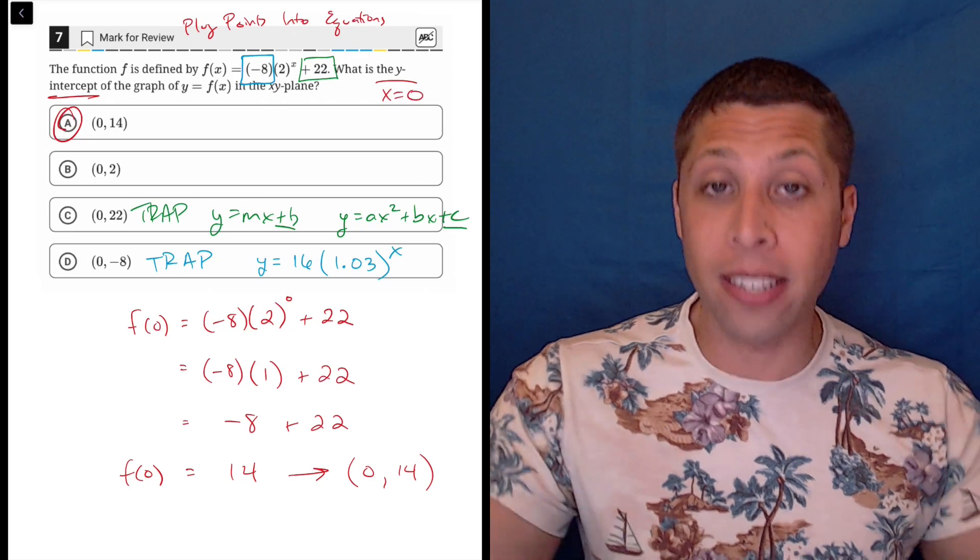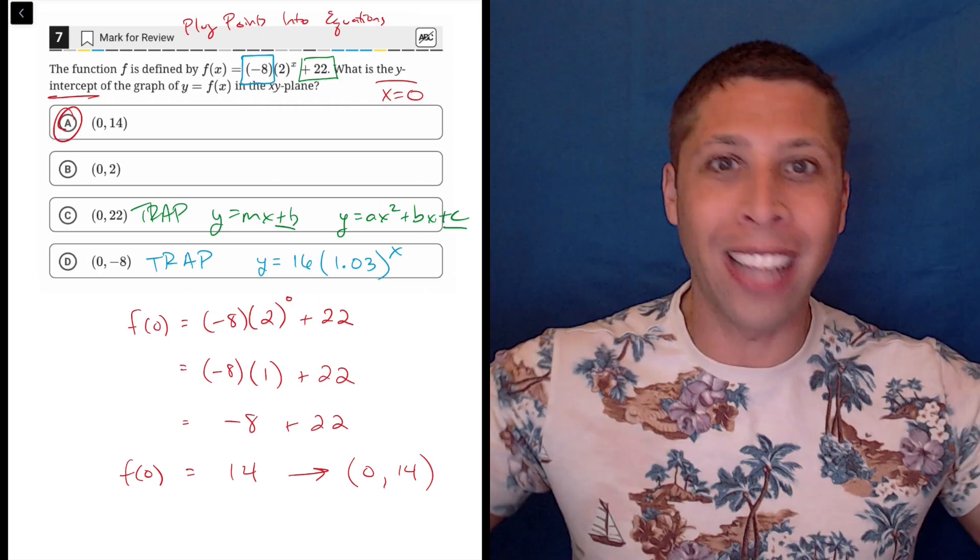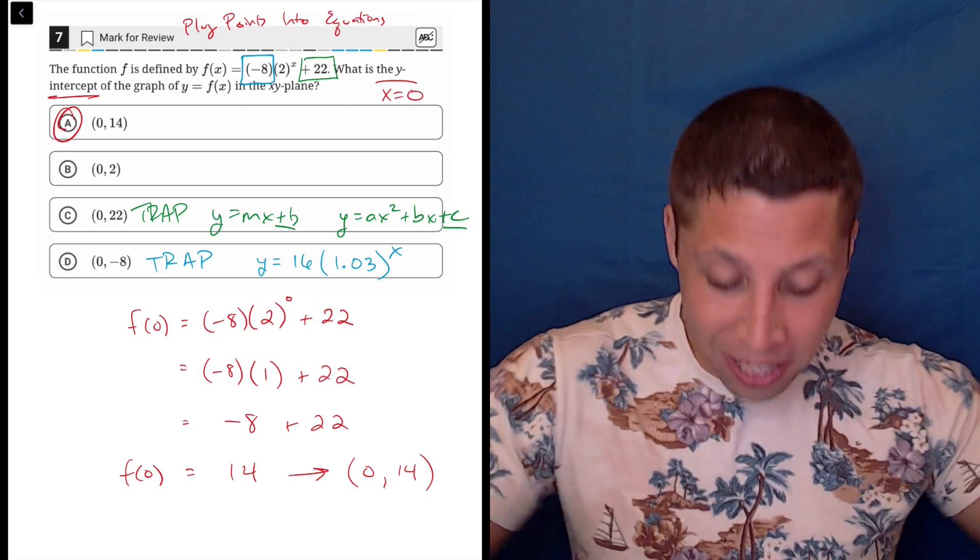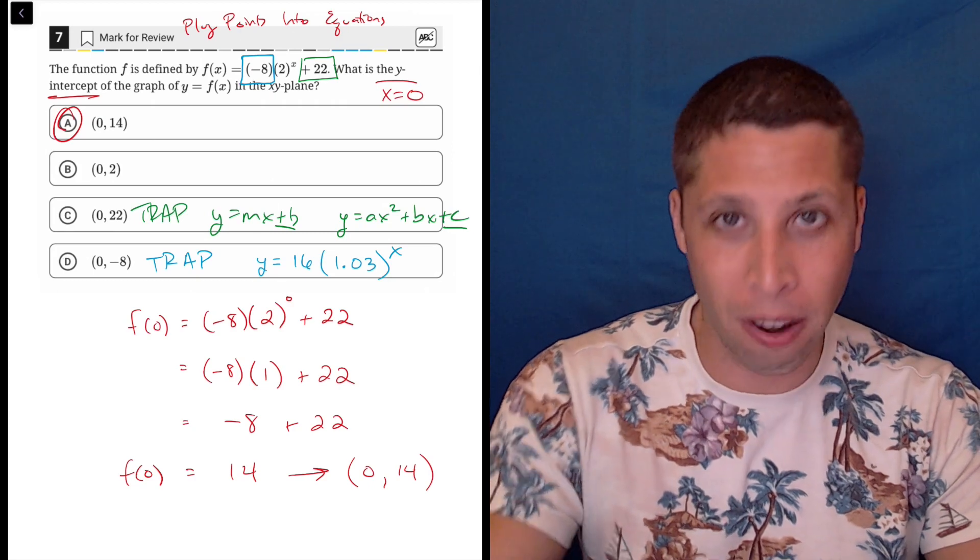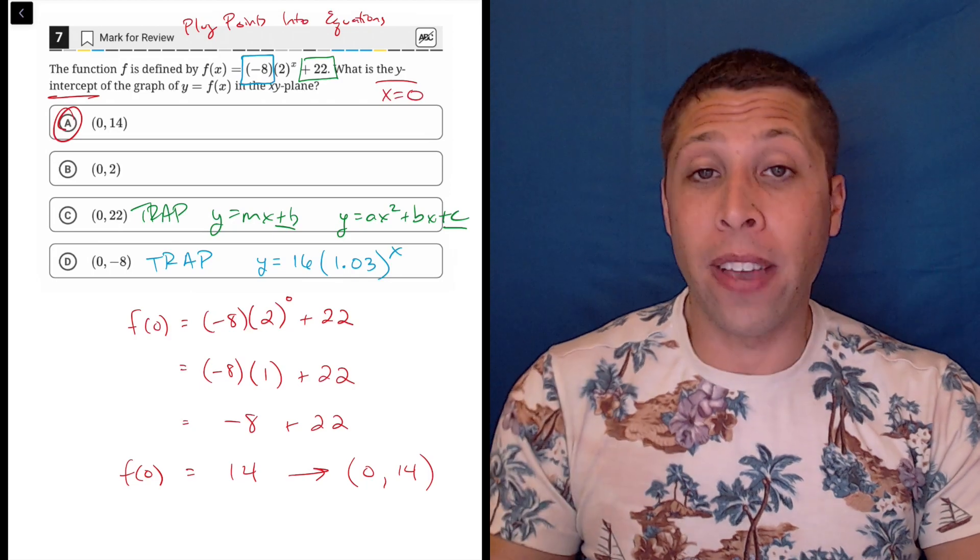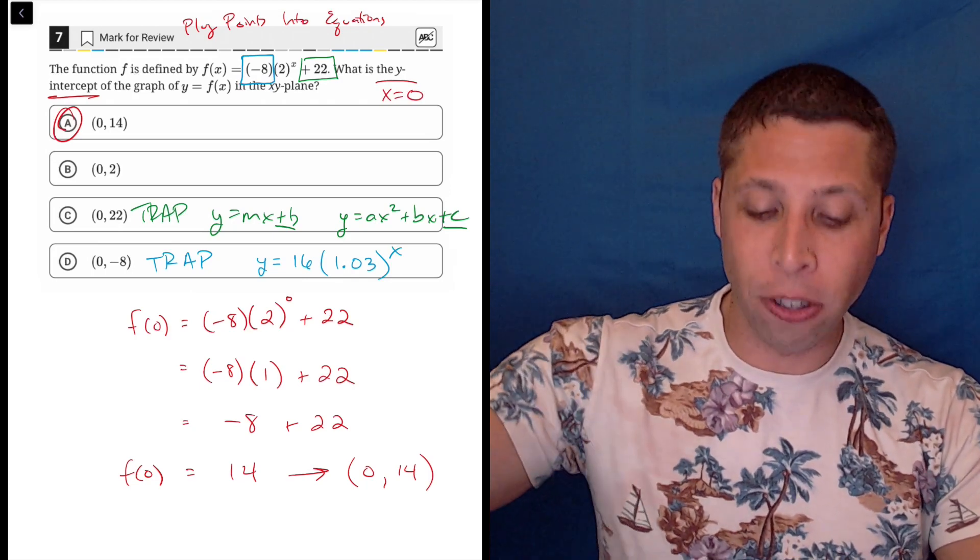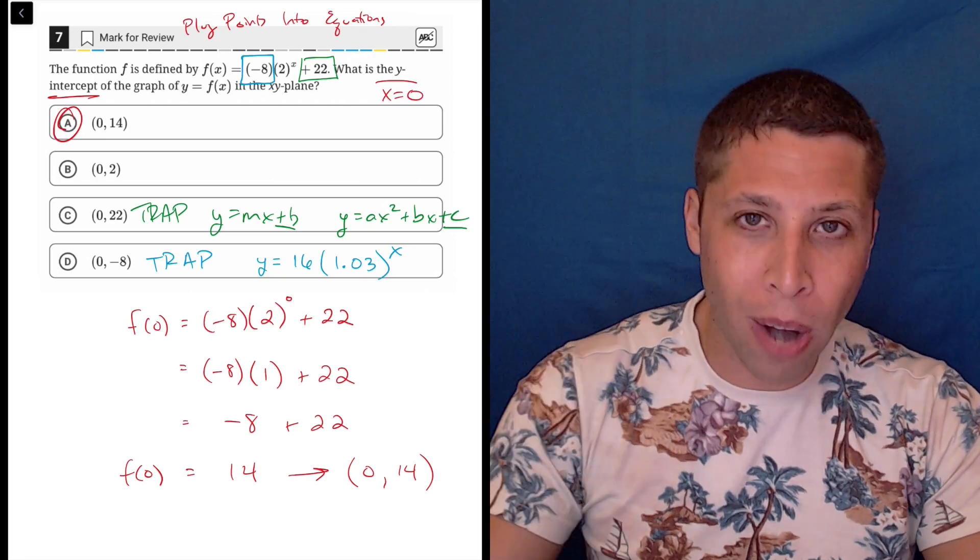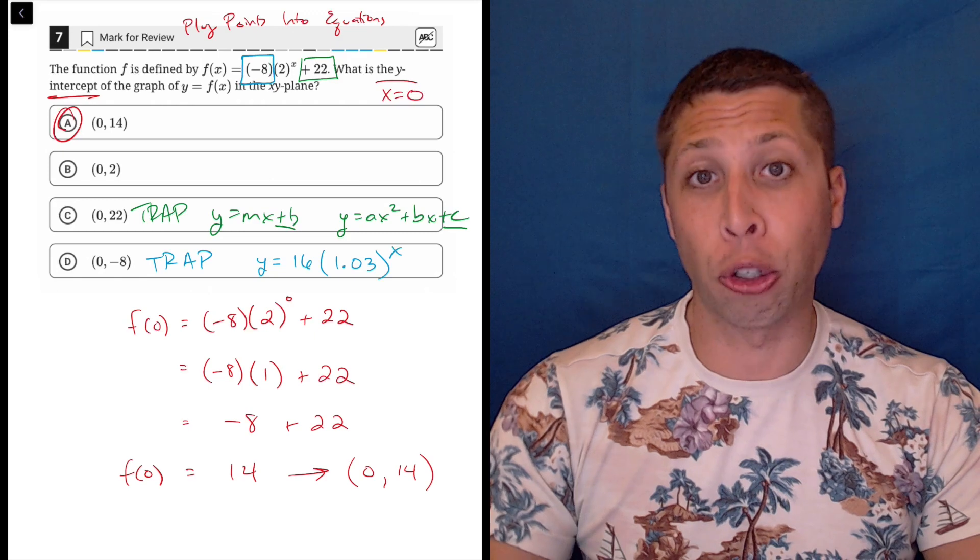And what choice A does is it takes into account both of those things, but it doesn't do it through some sort of intellectual exercise. We just did some math. We did some normal arithmetic and we let the answer just come out of the question. That is the benefit of plug points into equations. That is the benefit of avoiding algebra - you're also avoiding these trap answers that are deliberately put there to distract you and make you make mistakes and encourage you to take shortcuts when you shouldn't.